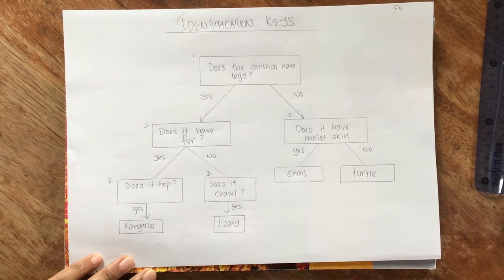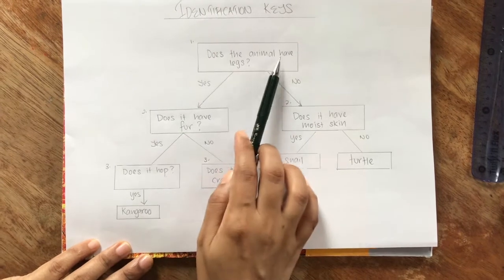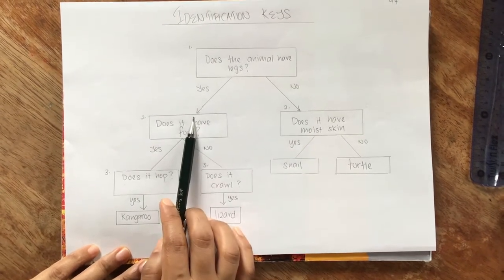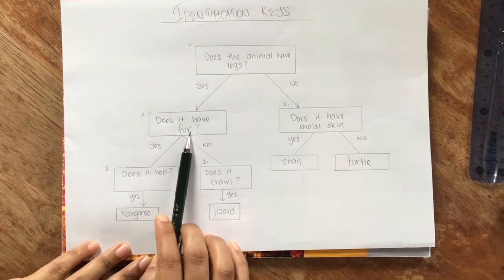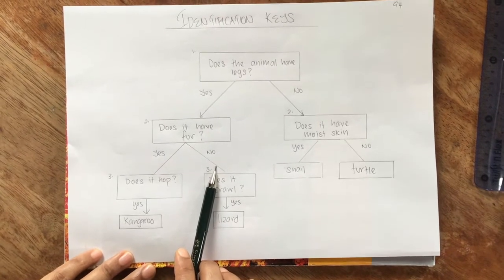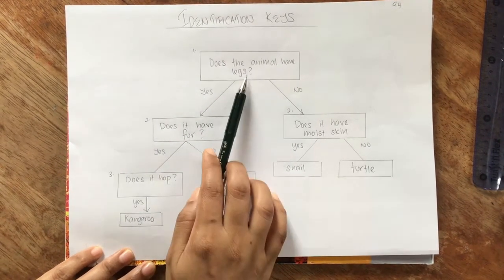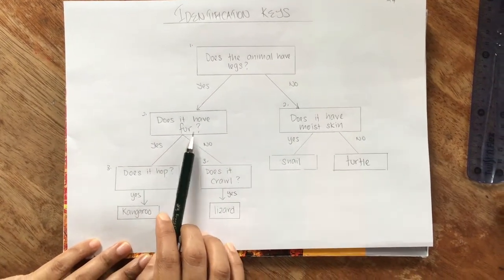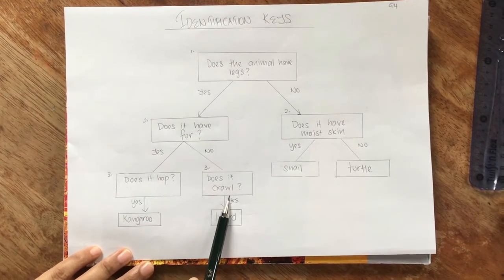Now let's go to our no. Does the animal have legs? Yes. Does it have fur? No. So what animal has legs but no fur? That leads to the third question. Does it crawl?